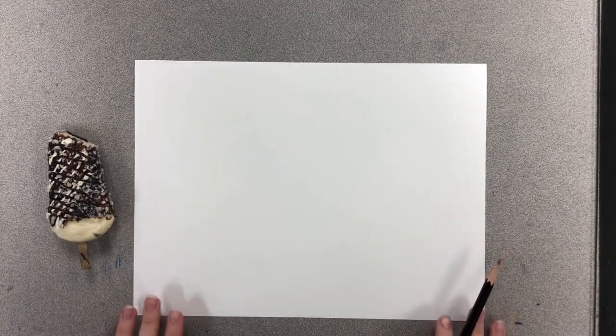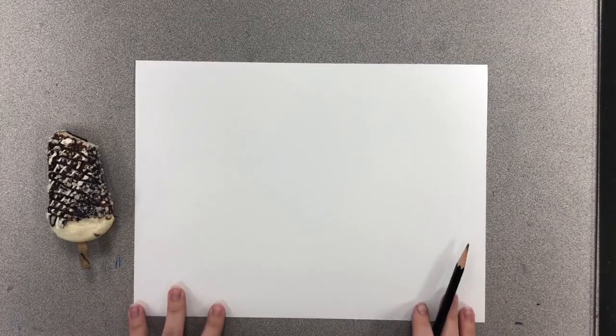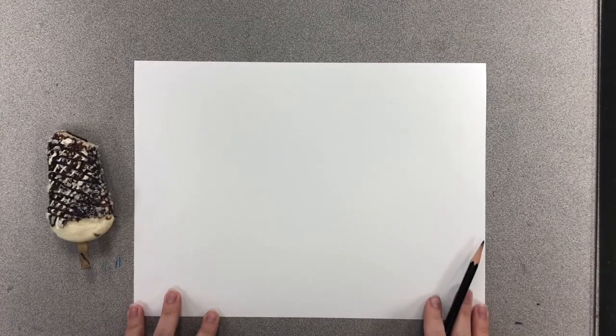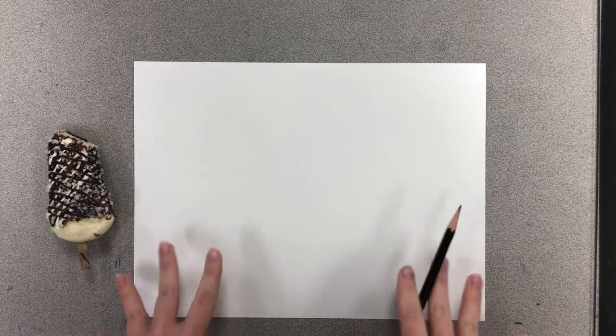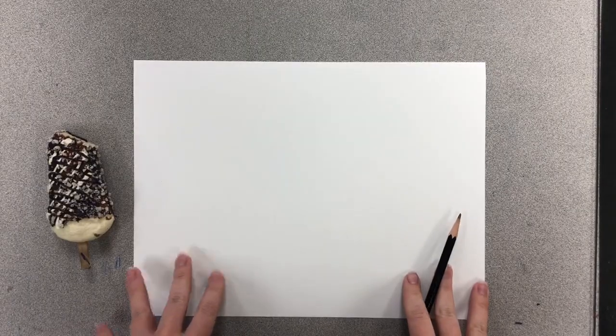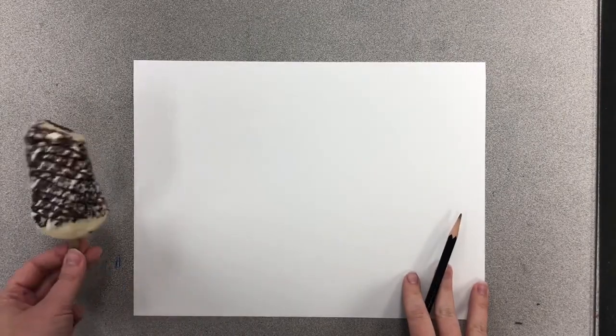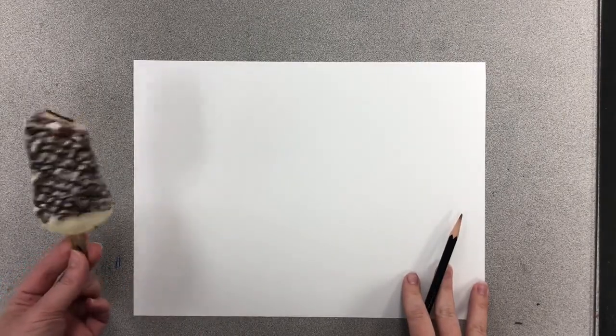Hello first grade, we are going to be drawing from direct observation. Now we've already learned that direct observation means when you are looking at what you are drawing. So I have picked up a dessert object here, I've got an ice cream cone.